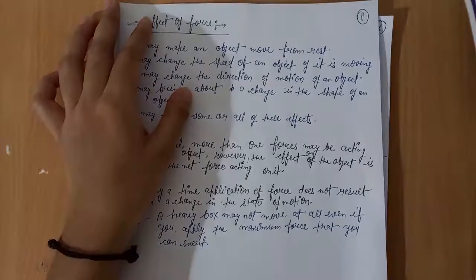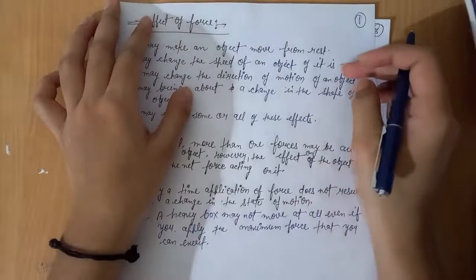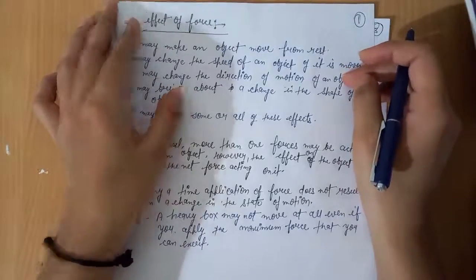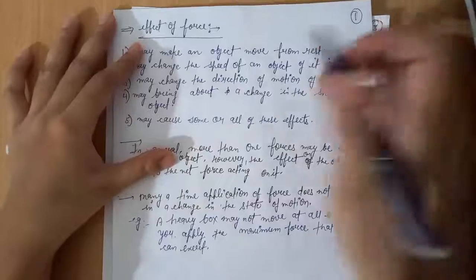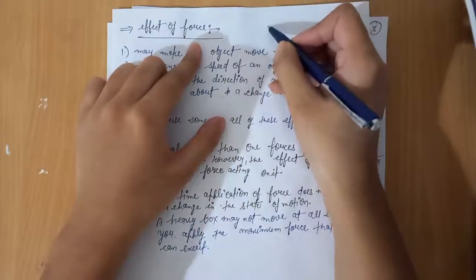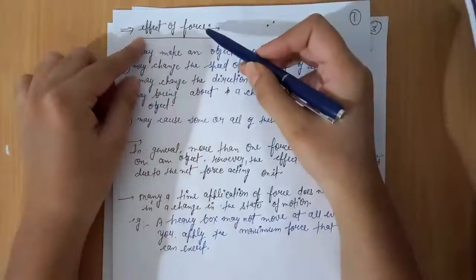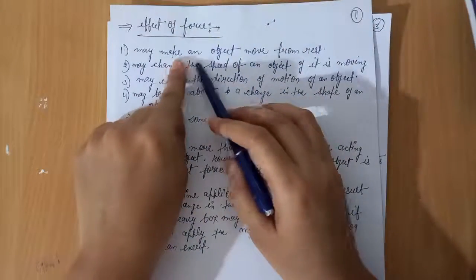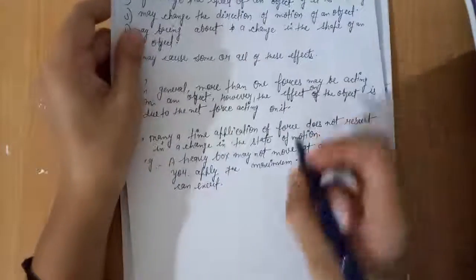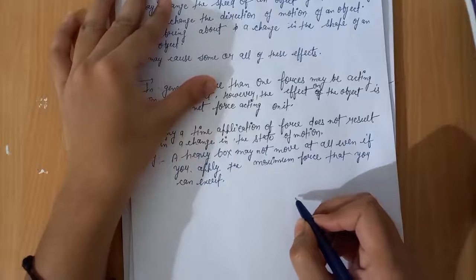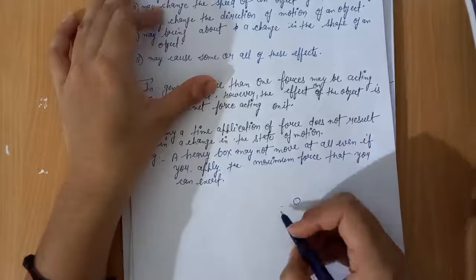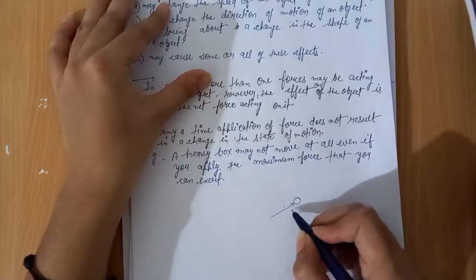In the last video we discussed about force — what is force, how the force is created between two objects, and the nature of the force. Next is the effect of force. Whenever the force is created between two objects, then the effects of the force may make an object move from rest. For the change in the state of motion of an object, force is applied on the object.